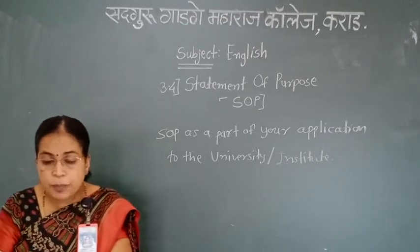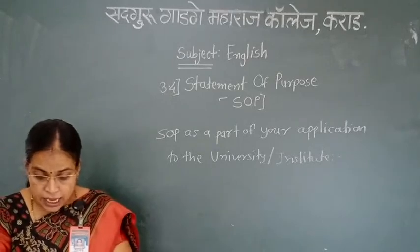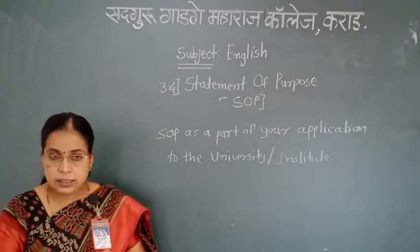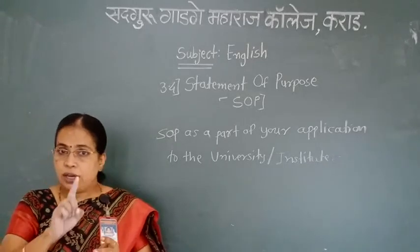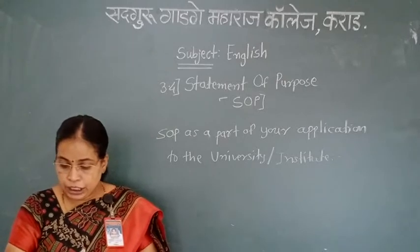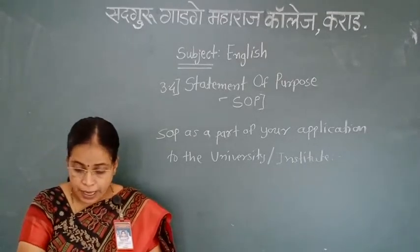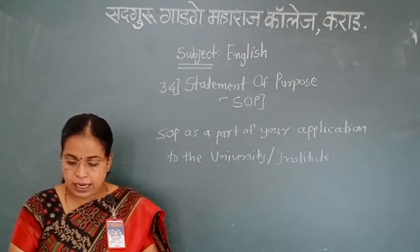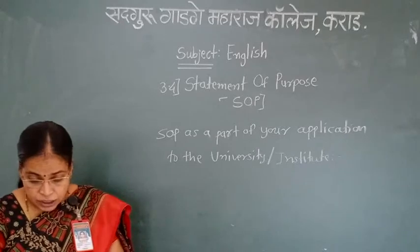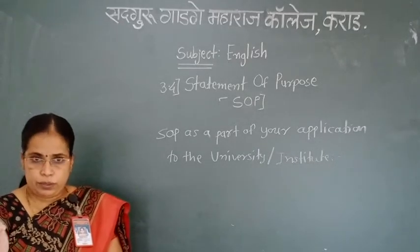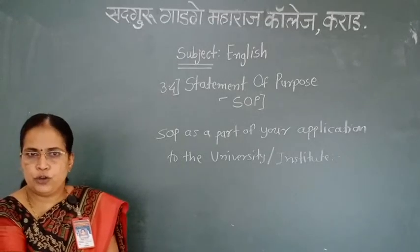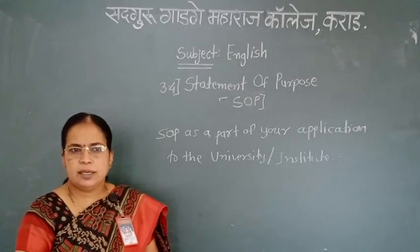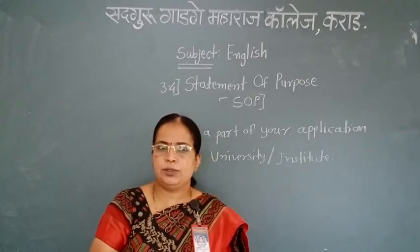Once again, while writing S.O.P: in the first paragraph, write your introduction, background and aim. In the second paragraph, write your purpose. In the third paragraph, highlight your qualities, hobbies and extracurricular activities. In the fourth paragraph, focus on your experience, project and specialty. And in the concluding paragraph, tell how that university or institute is beneficial for you. I think you have enjoyed this lecture. Try to write some samples of S.O.P. It is very easy to write S.O.P. Thank you.